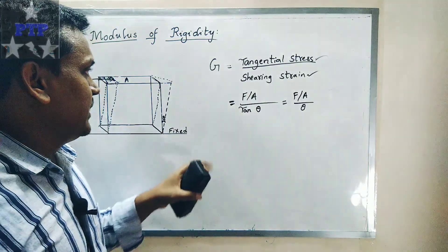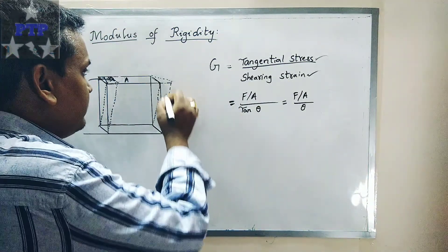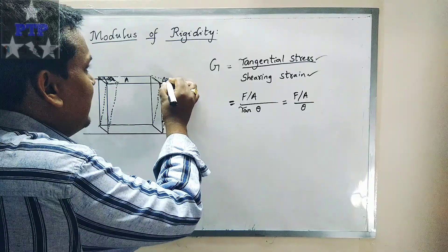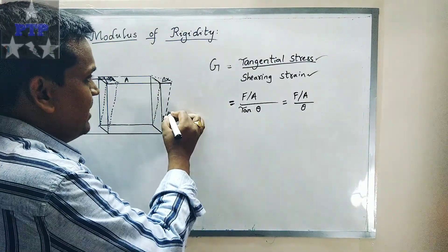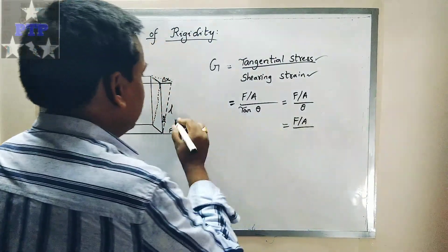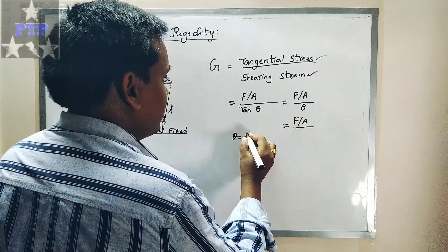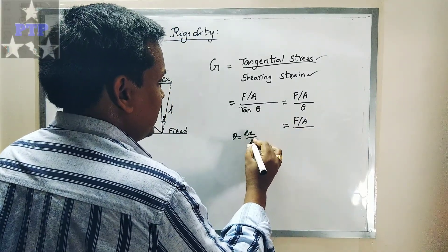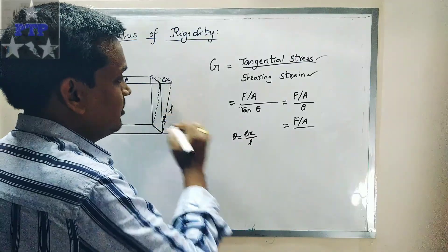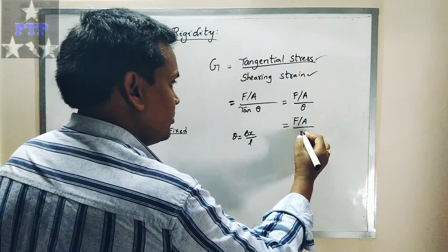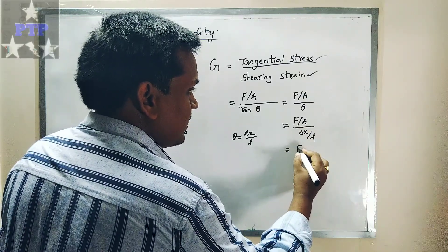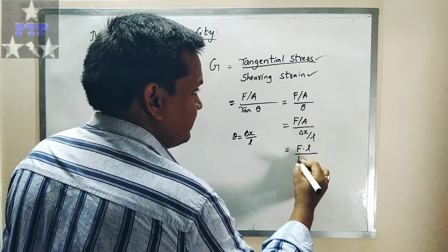The block makes some displacement Delta X, and the block has some length L. The angle theta equals Delta X divided by L — opposite over hypotenuse, or arc upon radius. So the shearing strain = Delta X / L. After substituting and reciprocating, G = (F × L) / (A × Delta X).